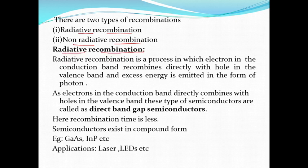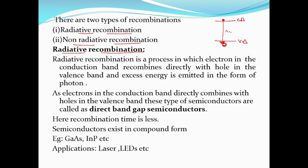Radiative recombination is a process in which the electron in the conduction band recombines directly with the hole in the valence band — it directly falls to its own state. When this type of recombination takes place, it emits light, meaning it emits a photon. Excess energy is emitted in the form of a photon. This type of recombination we call radiative recombination.